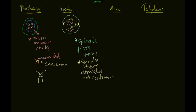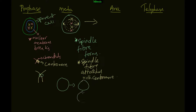Now let's go to anaphase. Remember, this is still your parent cell — all these processes happen inside the parent cell. Our goal is that from a single parent cell, two daughter cells will be produced. We are still inside this cell; those two daughter cells have not yet been produced.